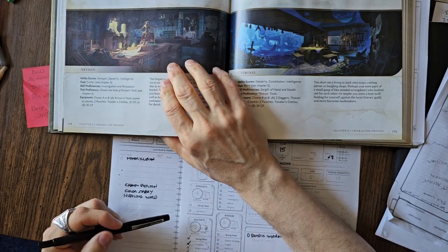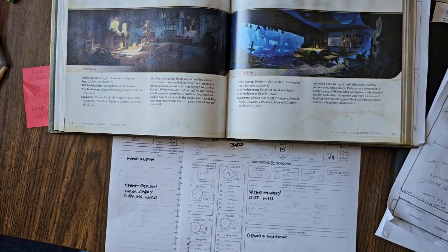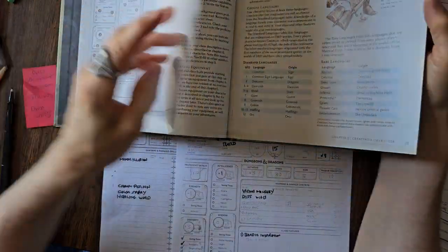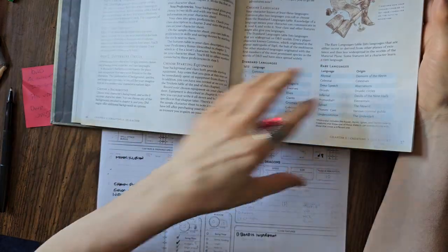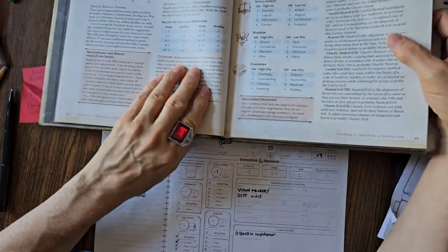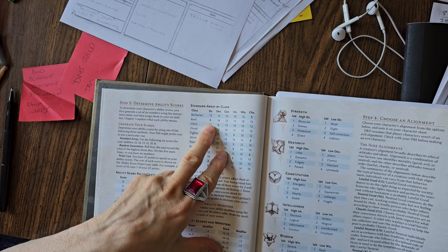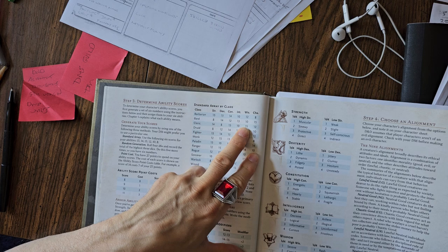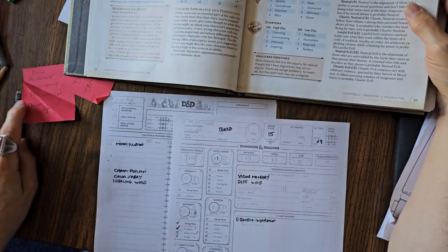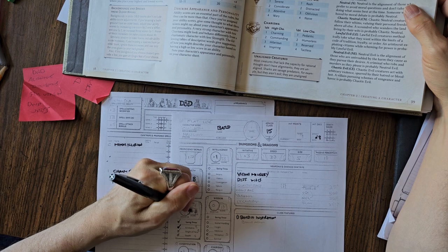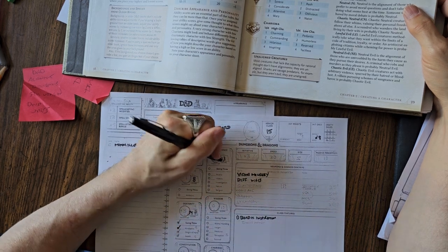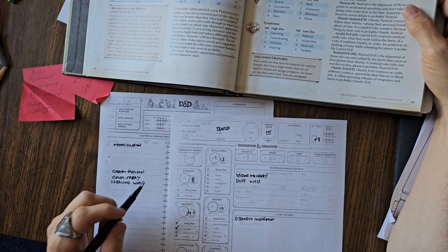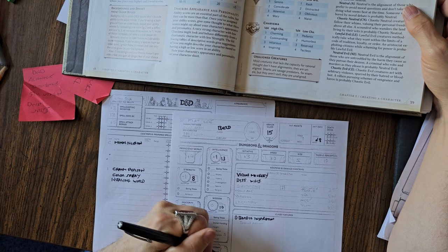I did standard array. The bard's standard array is: Strength 8, Dex 14, Con 12, Intelligence 11, Wisdom 10, and Charisma 15. So if I'm going to do that, then it makes sense that I would add one to Charisma and two to Dexterity because that'll take me up to 16 in both categories.